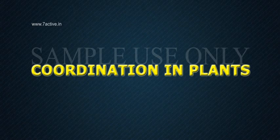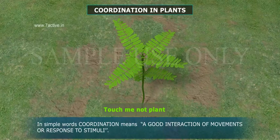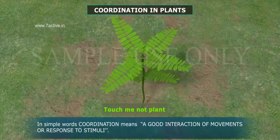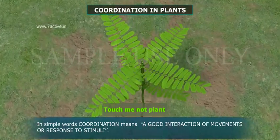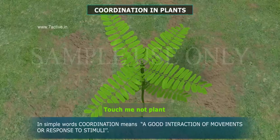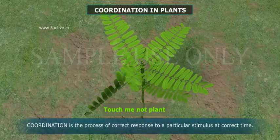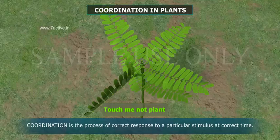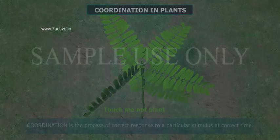Coordination in plants: What is coordination in plants? In simple words, coordination means a good interaction of movements or response to stimuli. Coordination is the process of correct response to a particular stimulus at the correct time.